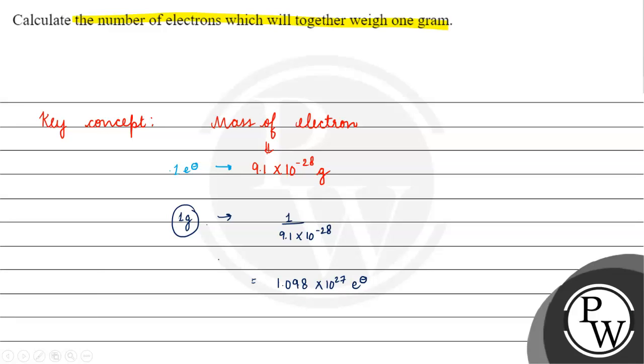How did we calculate this? We have one electron's mass. So to find in 1 gram mass, what do we do? It will be 1 upon 9.1 into 10 to the power minus 28.